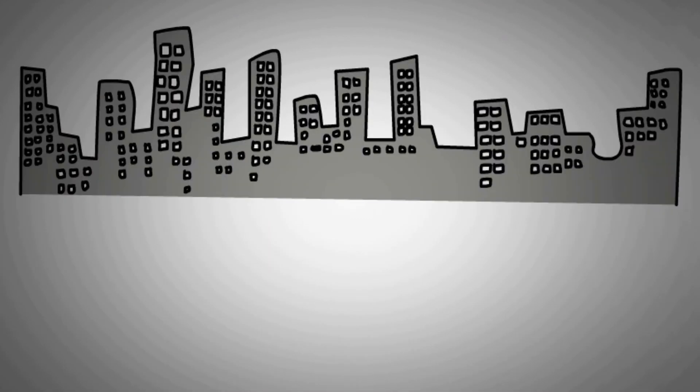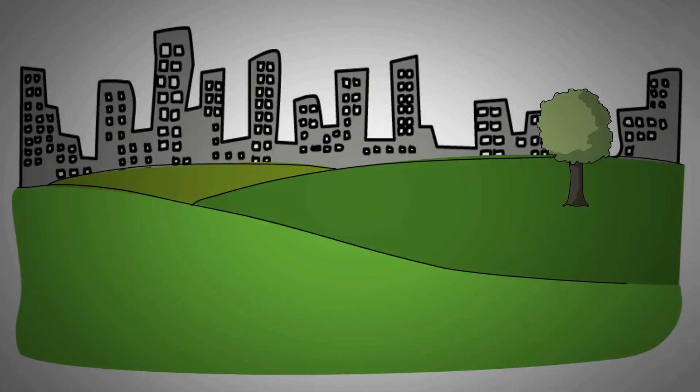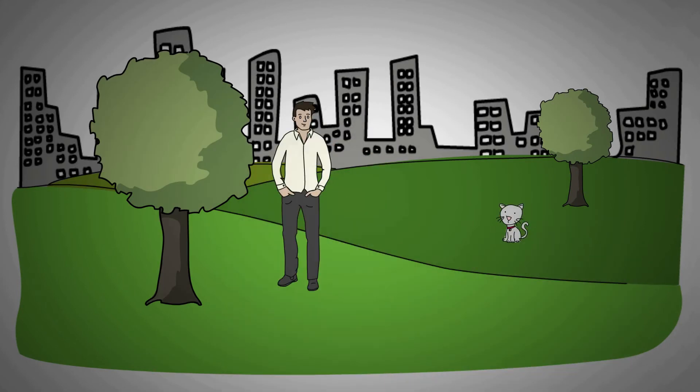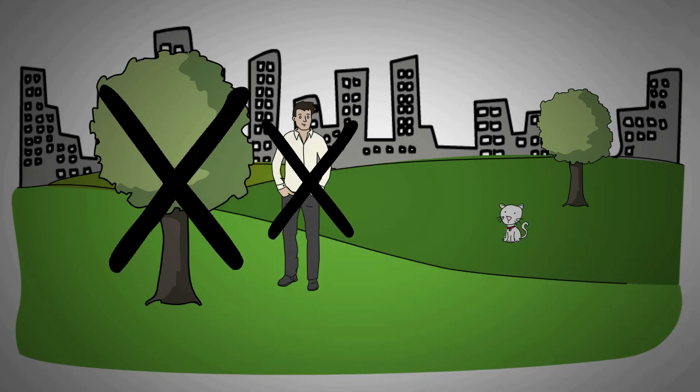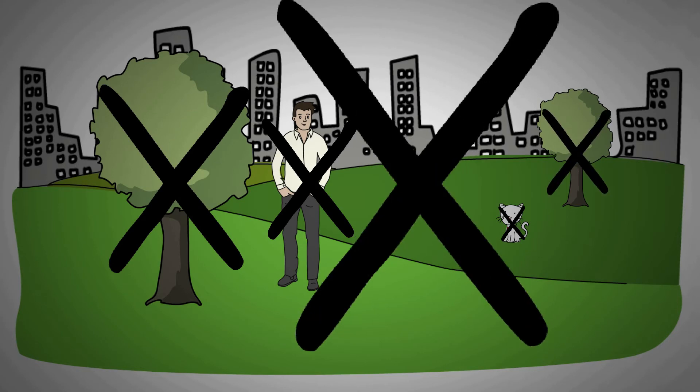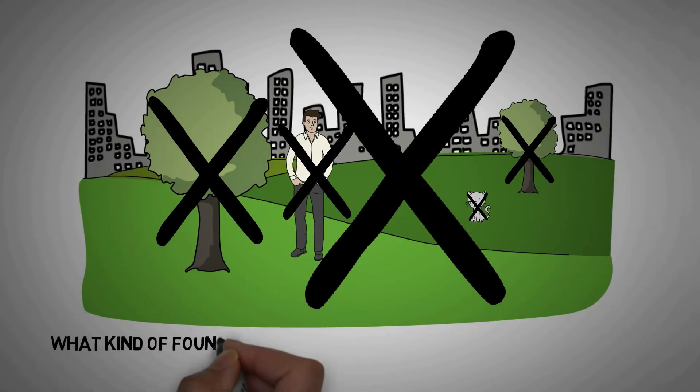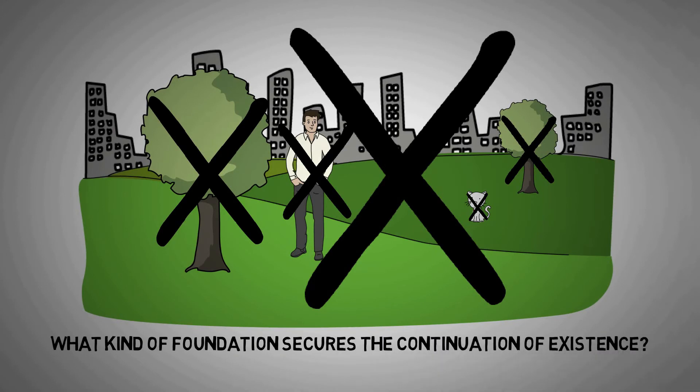Let us not confuse the familiar with the insignificant. Continued existence is familiar. No one worries that the world and everything in it might vanish like vapor at any moment. But that's hardly insignificant. Why don't things vanish? What kind of foundation secures the continuation of existence?